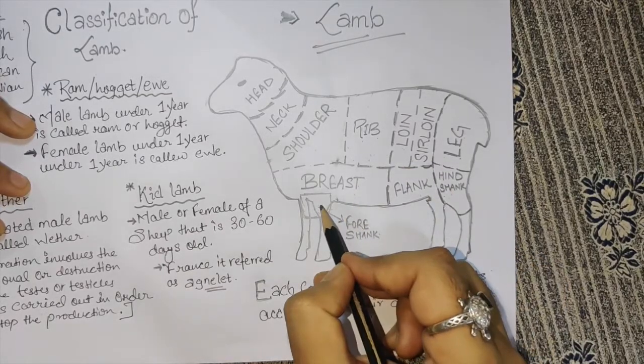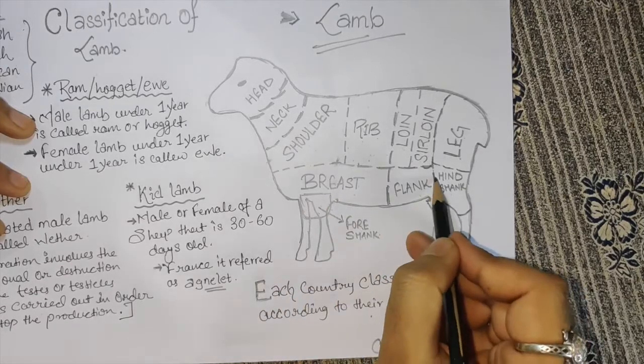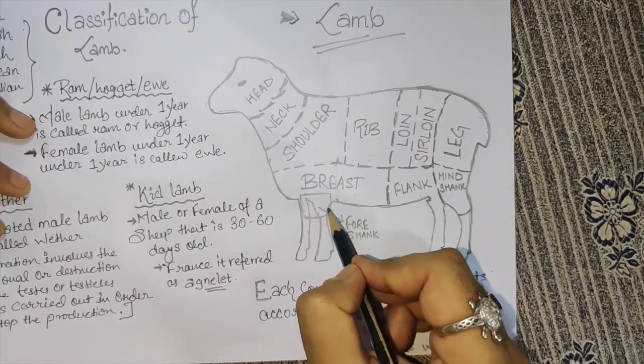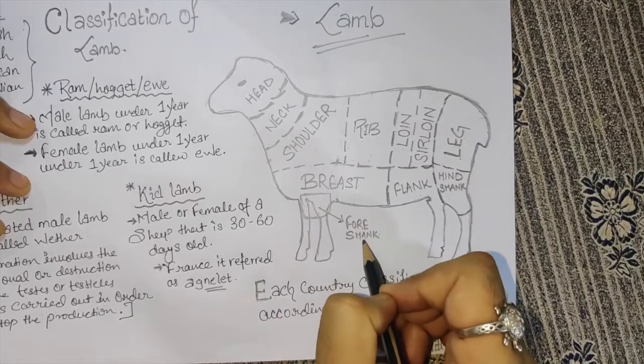This front area is the foreshank. Each front leg is the foreshank.